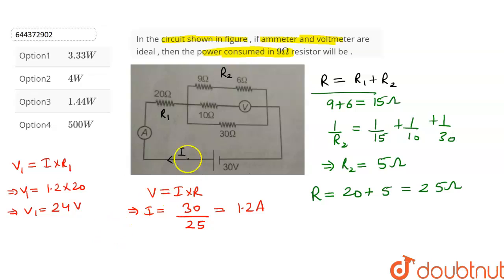So the voltage drop across this equivalent resistance R2 will be equal to V2 which is V minus V1. So V2 comes out to be 30 minus 24 and V2 is equal to 6 volts.